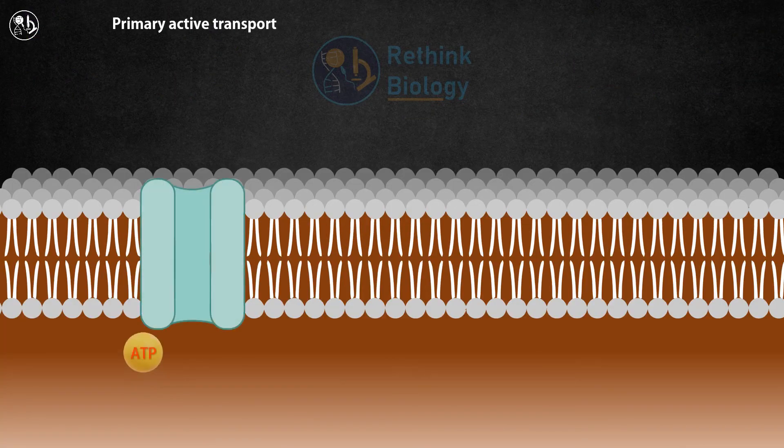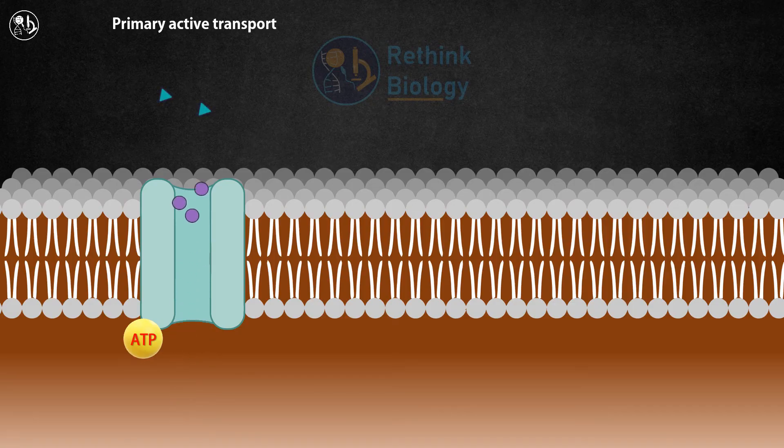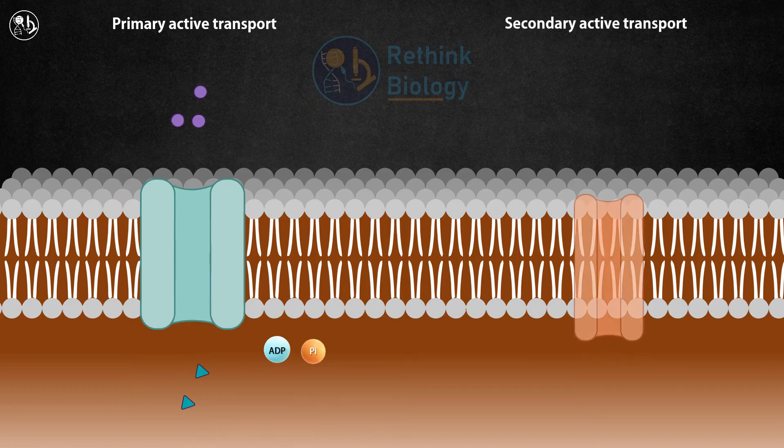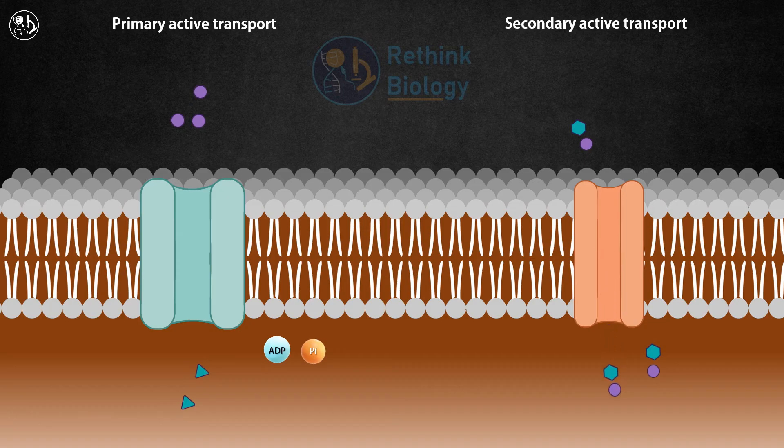Primary active transport uses ATP directly as a source of energy, while secondary active transport uses the energy stored in a sodium ion gradient to move substances.